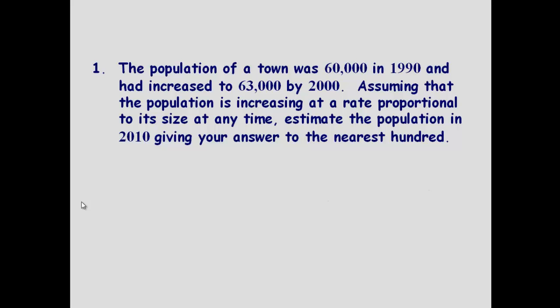I'm going to start off by going through a question a bit at a time, and then you can have a go at one. This first question: the population of a town was 60,000 in 1990, had increased to 63,000 by 2000, assuming that the population is increasing at a rate proportional to its size at any time. Estimate the population in 2010, giving your answer to the nearest hundred.